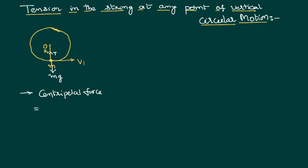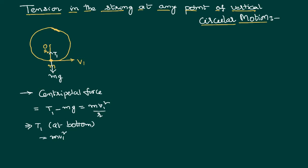At the bottom, tension is acting towards the center and Mg is acting away from the center. Therefore, T minus Mg is the centripetal force at that point. T is treated as positive because it acts towards the center, and Mg as negative because it acts away. So the tension at the bottom can be written as T = Mv1² / R + Mg, where V1 is the velocity at the bottom and R is the length of the string.